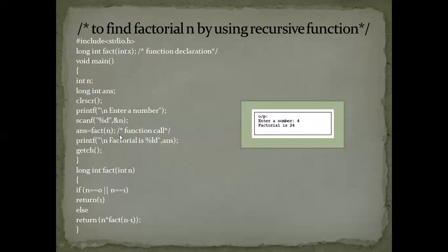Next, answer is equal to fact(n). Here fact(n) is a function call — fact is the function name and n is the parameter passed. When I call this function, control automatically goes to the factorial function, which has return type long int and parameter int n. If n is equal to zero or n is equal to one, it returns 1, because zero factorial and one factorial both equal 1.